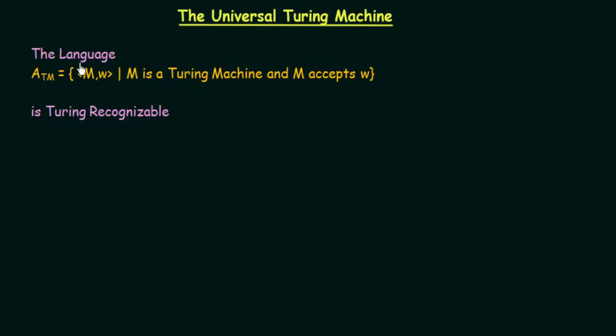This language A_TM is Turing recognizable — we are calling it recognizable but not decidable. Why we are not calling it decidable is because we don't know what this Turing machine M is actually doing. It may be a Turing machine that is doing some specific task that we don't know. Depending on the strings that we pass to it, this Turing machine may sometimes accept, sometimes reject, or sometimes go into a loop. We can't say for sure. That is why we call it recognizable but not decidable.